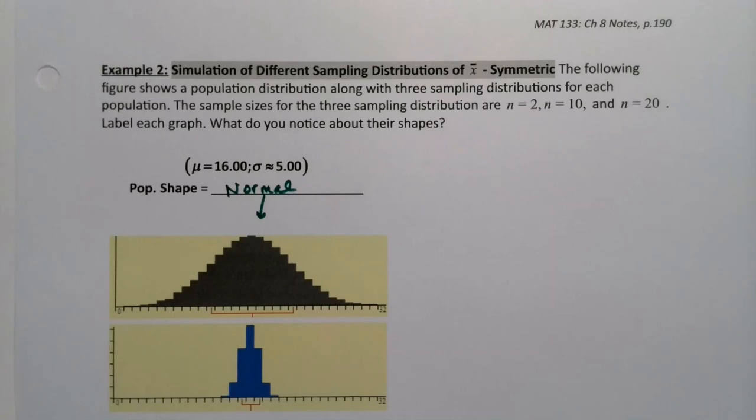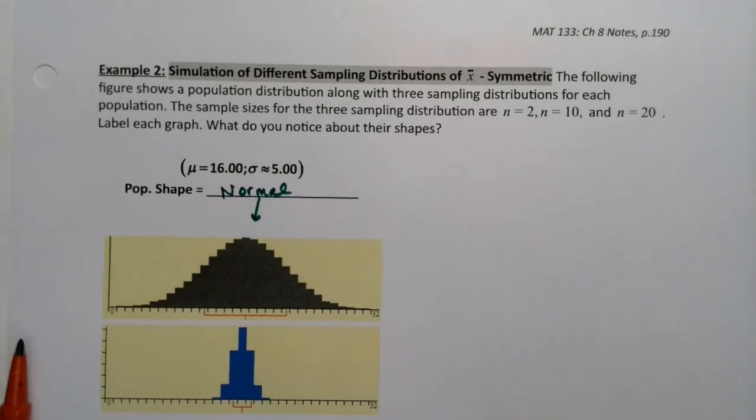So we saw how the central limit theorem played out if the distribution was skewed or non-symmetric. But what if it is a symmetric distribution? What if it's a normal distribution to begin with? Then what happens? That's a perfectly reasonable question to ask.